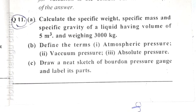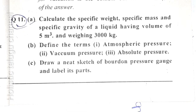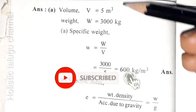The question asks to calculate the specific weight, specific mass and specific gravity of a liquid having volume of 5 m³ and weighing 3000 kg. Define the terms: atmospheric pressure, vacuum pressure, absolute pressure. Draw a neat sketch of Bourdon pressure gauge and label its parts. First, the given values.